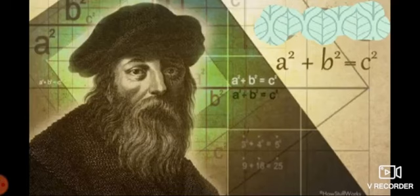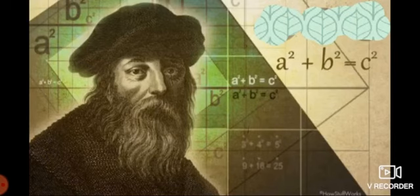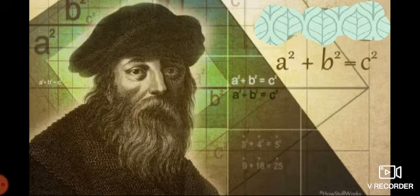Now let us learn the Pythagoras theorem. Before that, let us know about the person who first proved this theorem. On the screen you can see a person whose name was Pythagoras. He was a great mathematician of the 6th century BCE. He made important contributions to mathematics and his method of teaching was very popular. He trained several mathematicians. People of many countries had long known a certain principle related to the right angle triangle — it is also given in the book called Shulva Sutra of ancient India. As Pythagoras was the first to formally prove the theorem, it is named after him.